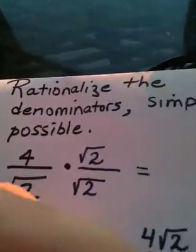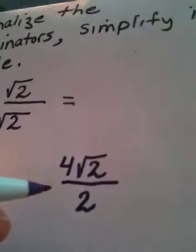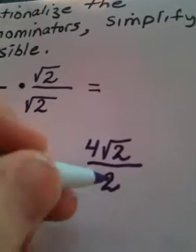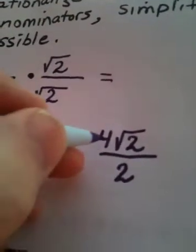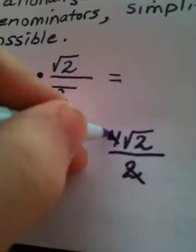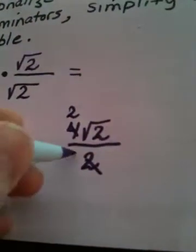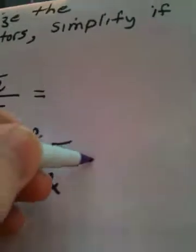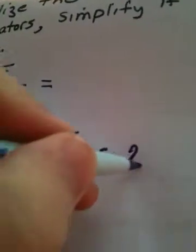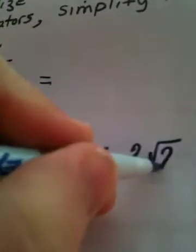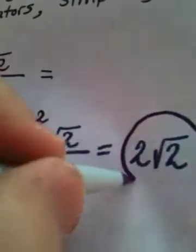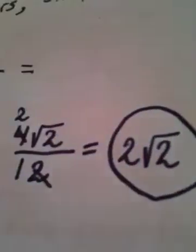Now the last part of the direction says simplify if possible. Well, it is possible. Look what happens. This 2 cancels into that 4, 2 times, really leaving a 1 in the denominator. My final answer is 2 radical 2. And we're done.